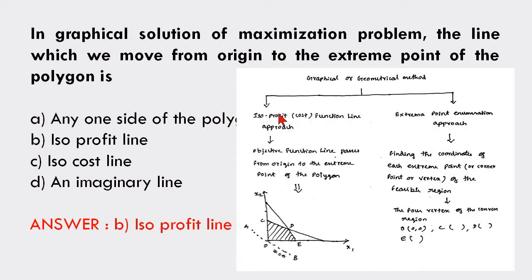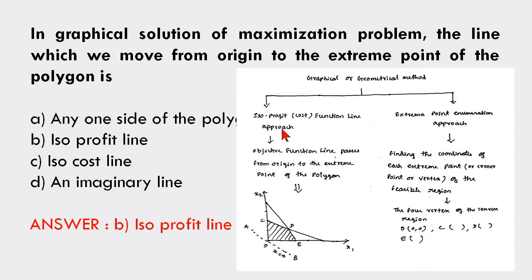In the isoprofit or cost function line approach, we consider the objective function line at the origin — which passes from the origin to the extreme point of the polygon. We consider the objective function Z equal to zero and move from the origin to the extreme point of the feasible region. So this approach is called the isoprofit or cost function line approach.